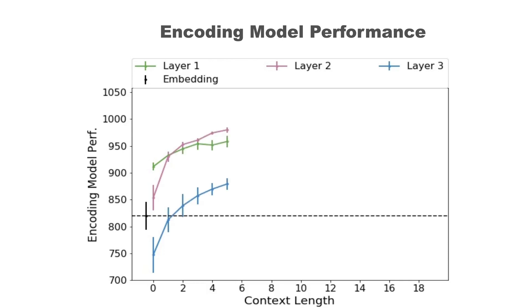This graph shows model performance for different context lengths and layers for six subjects. Overall, we find that the contextual models from all LSTM layers beat the earlier embedding space model. Each layer performs differently, suggesting that it represents different information.